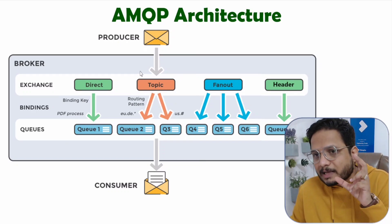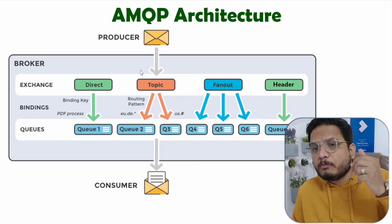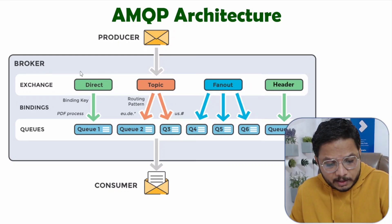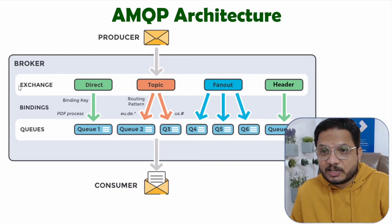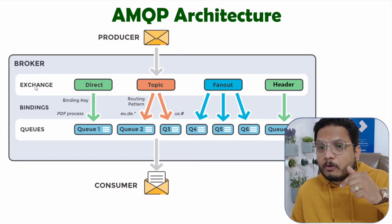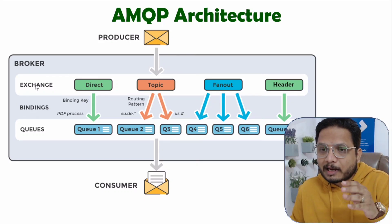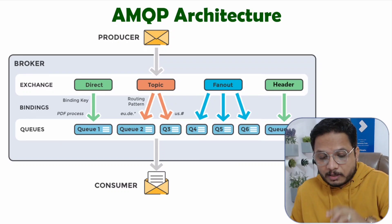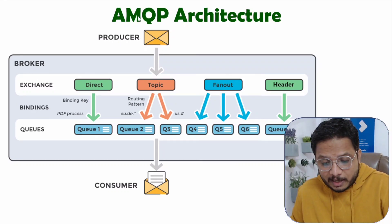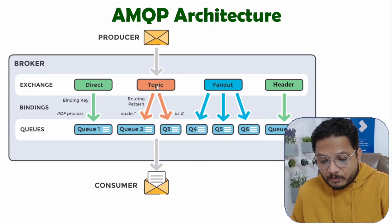Since this is an advanced message queuing protocol, there are additional functionalities. With the broker, there is an exchange that defines how routing will happen. There are four types of exchanges in AMQP architecture: direct, topic, fanout, and header.